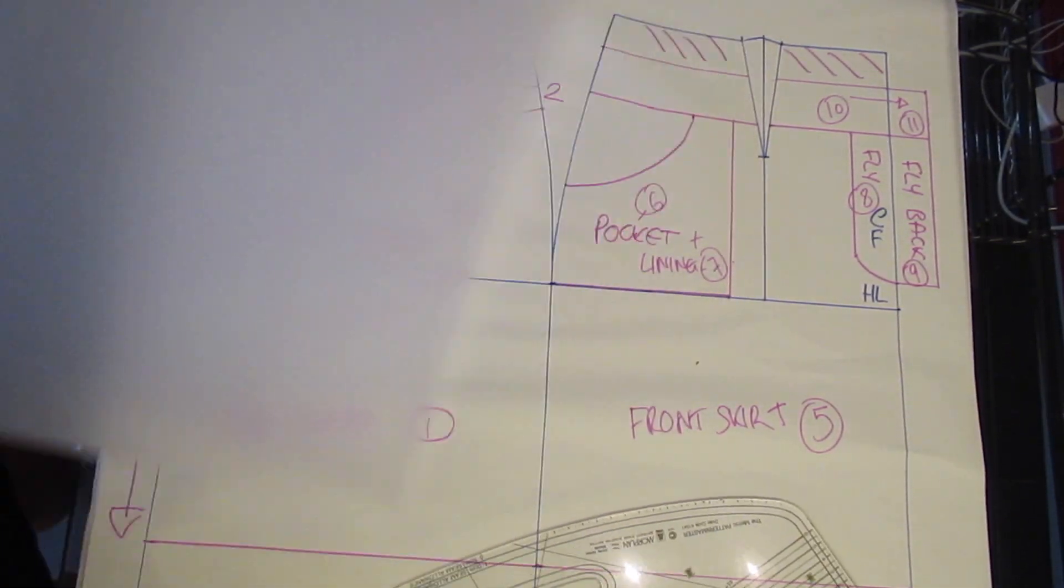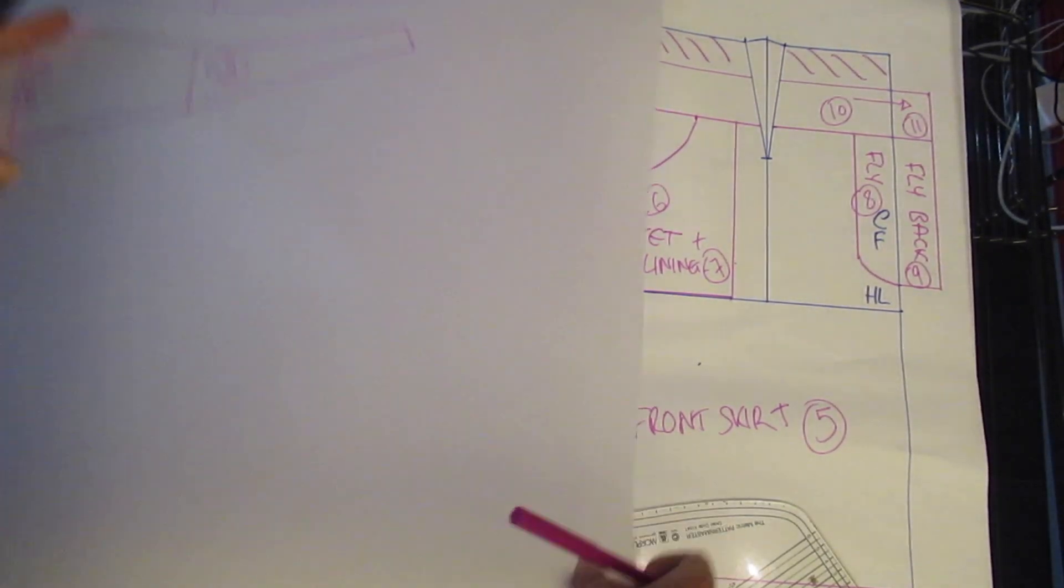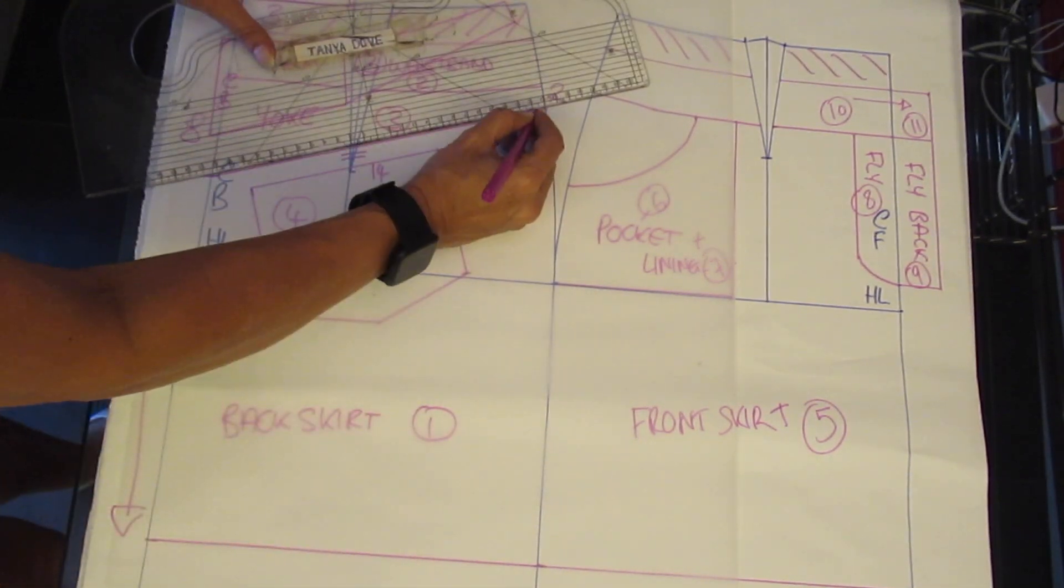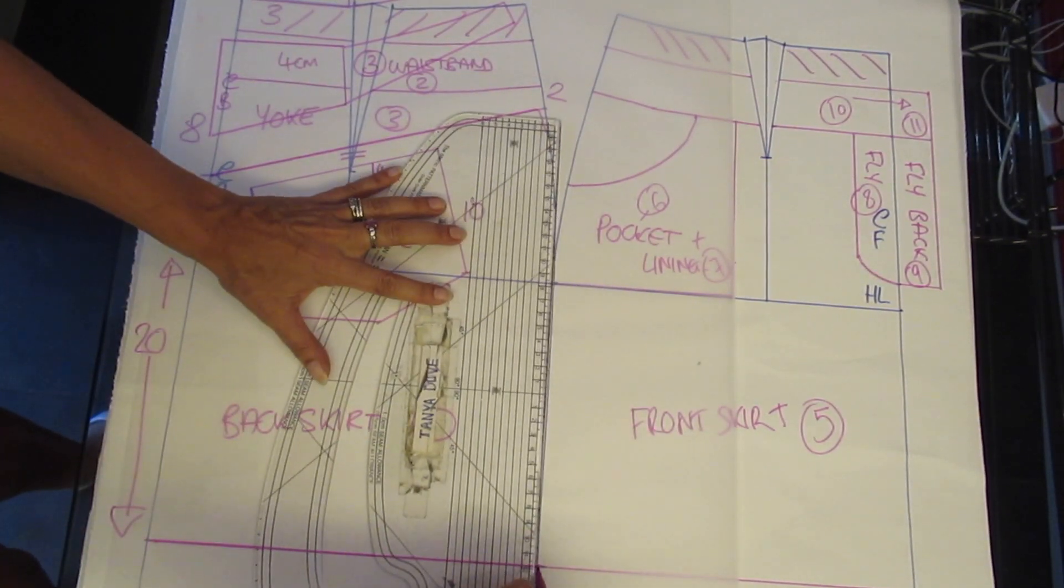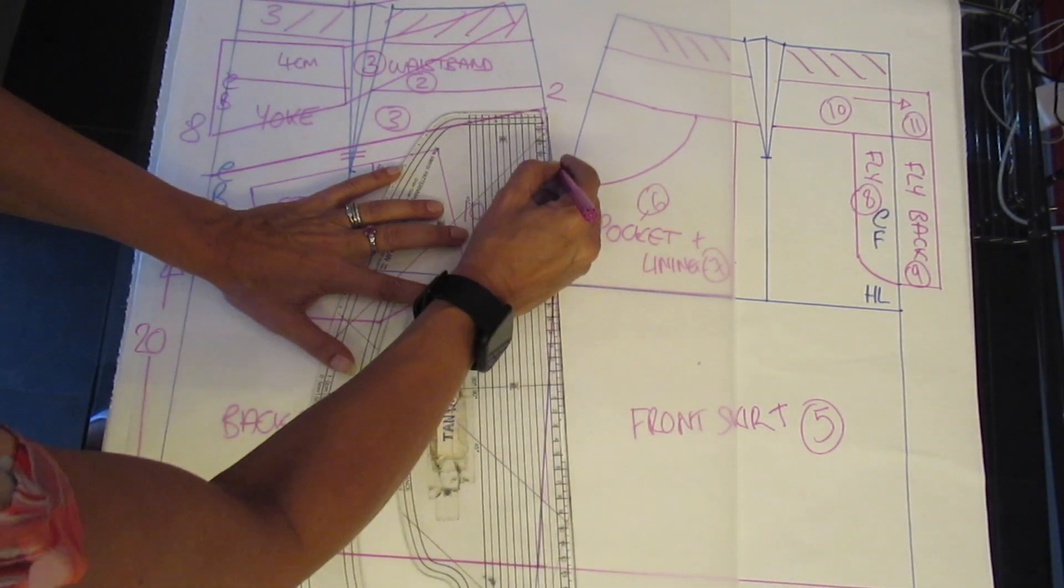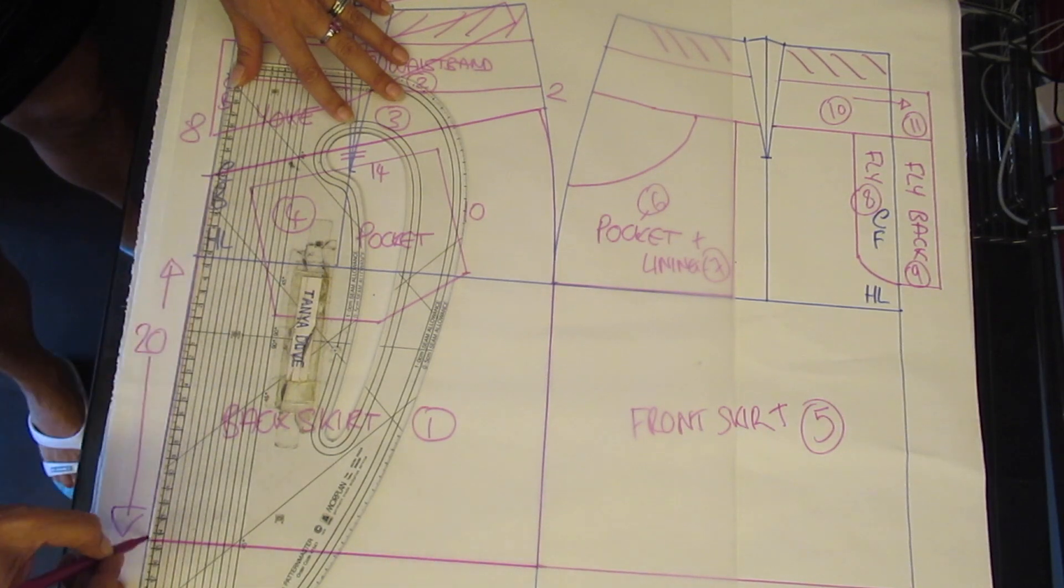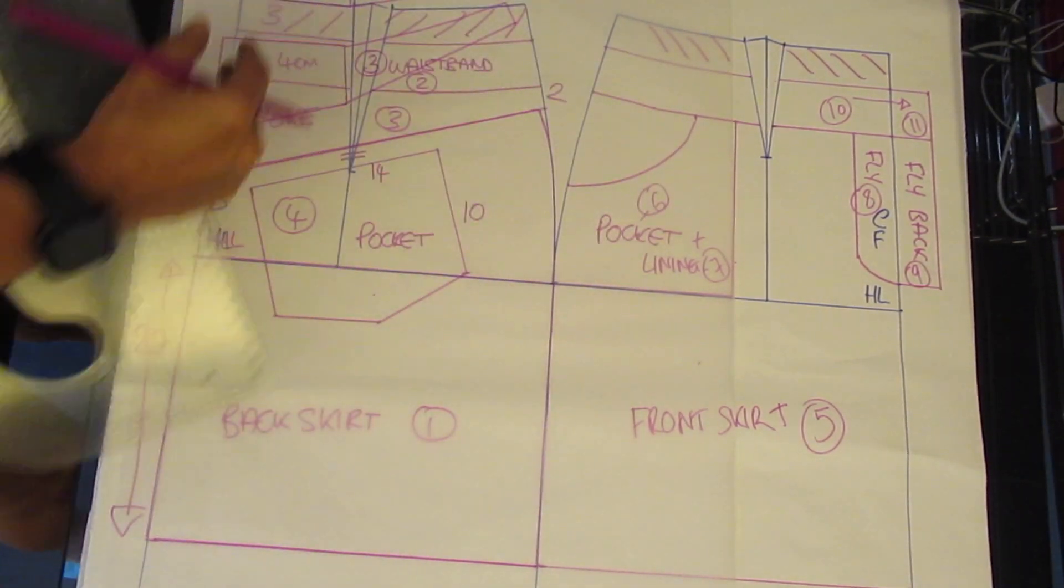Make sure when you're tracing you're leaving enough room to add in your seam allowance. The tiny bit of dart left you don't need. Move it to the side seam so the measurements remain the same. Don't forget to draw in your hip line on the pattern piece.